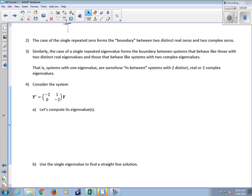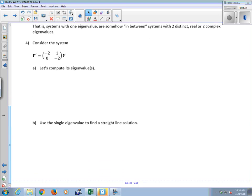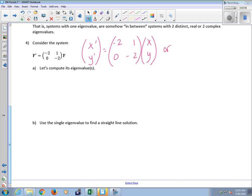Let's look at an example. I want to compute the eigenvalues for y prime, which is matrix A times y. First, let's translate this: x prime, y prime equals negative 2, 1, 0, negative 2 times x, y. Or you can write it as two separate systems: x prime is negative 2x plus y, y prime is 0x minus 2y.